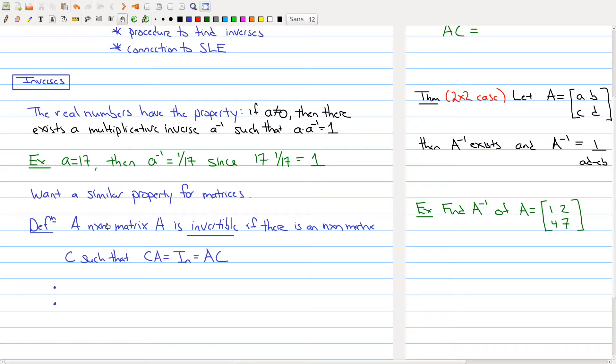We say that a square matrix A is invertible if there's another n by n matrix C such that C times A is equal to the identity, or the same thing as A times C gives me the identity. The n here refers to the size of the matrix. When we're dealing with matrices, the identity plays the role of one.